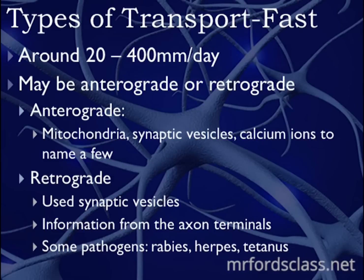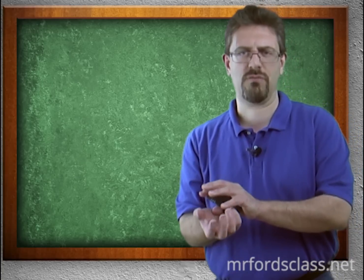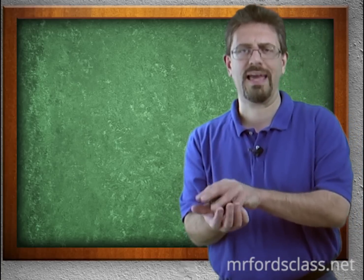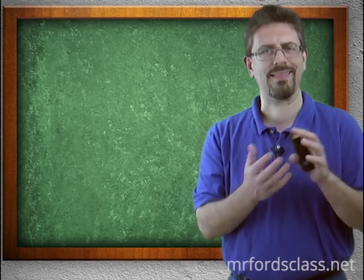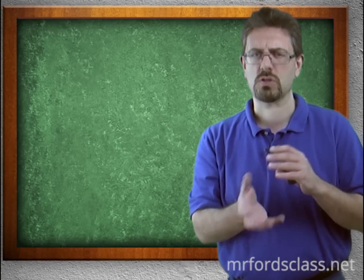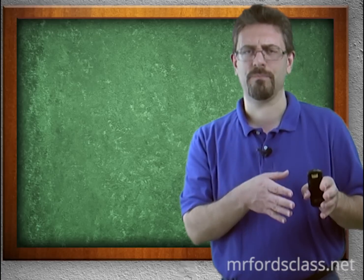In the antegrade direction, fast transport moves things like mitochondria, synaptic vesicles, and calcium ions away from the cell body. In the retrograde direction, it uses synaptic vesicles and carries information from the axonal terminals back to the cell body, letting the cell know what's going on down at the end of its tail.